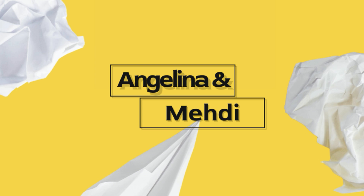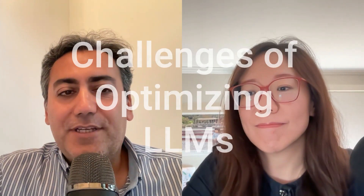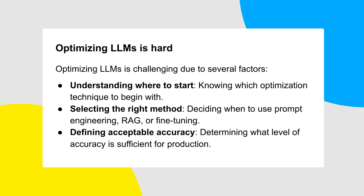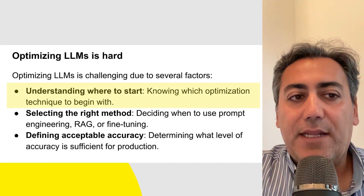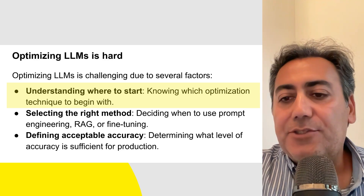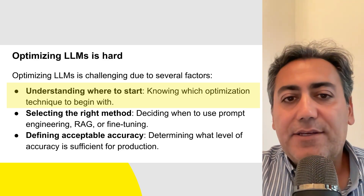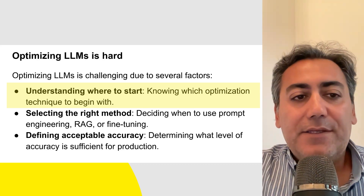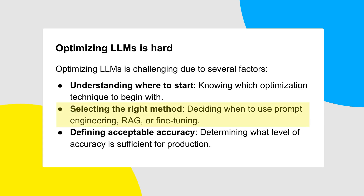If we want to start optimizing accuracy, what is the first thing we should do? Before answering that, we need to explain the challenges of optimizing LLMs. It's a very hard and challenging problem with several factors to consider. First, we need to understand where to start. There are several different optimization techniques, and LLMs are essentially stochastic, non-deterministic systems — that's why it's important to make sure they behave the way we want. There are different approaches, and we need to select the right method.